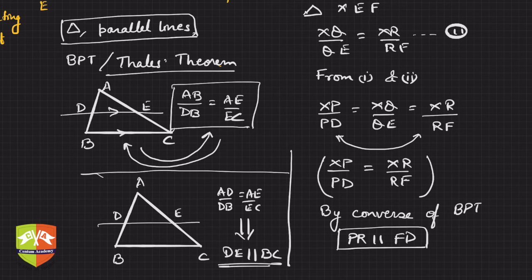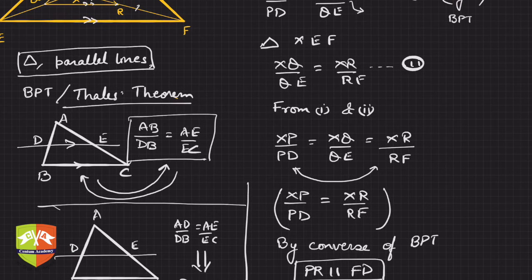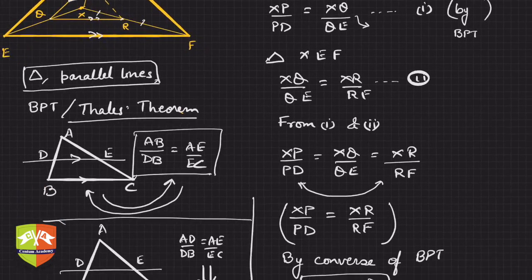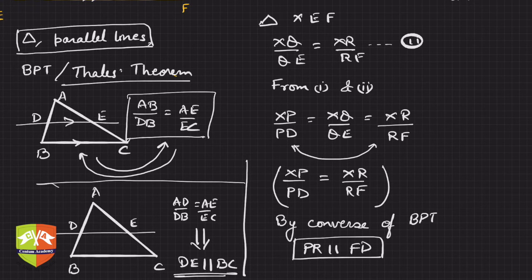That's what we used here and hence we got PR to be parallel to FD. I hope you understood the solution. So try some more problems similar to these types from a standard textbook.